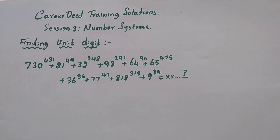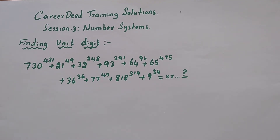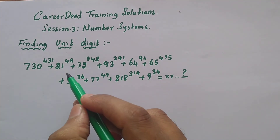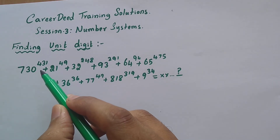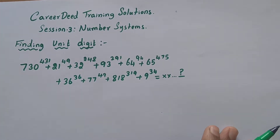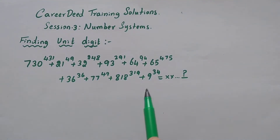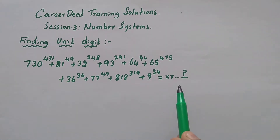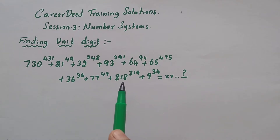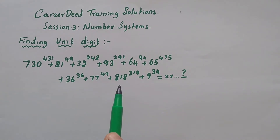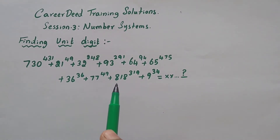Welcome to KDD Training Solutions. I'm Mohan and this is session 3 on number systems. In this video I will show you how to find the unit digit of any number when raised to a power. Here I have an example starting from 730 power 431 to 9 power 34. Your objective is to solve the entire series and find the last digit. If you want to solve this type of problem using the traditional method you will find it difficult, so here I have a short trick that will take a minimum of 1 minute to solve.